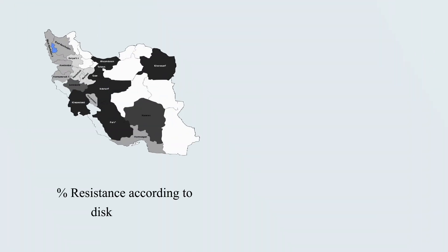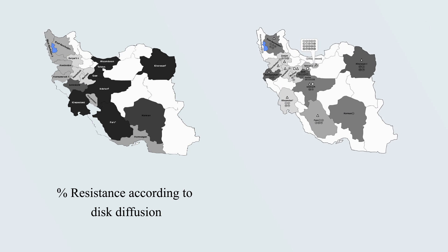This picture illustrated the percent of resistant strains according to disk diffusion versus the percent of resistant strains according to resistant genes.